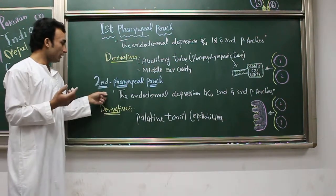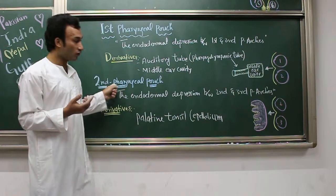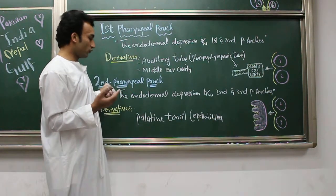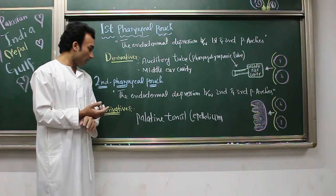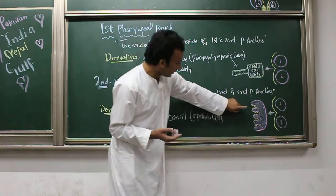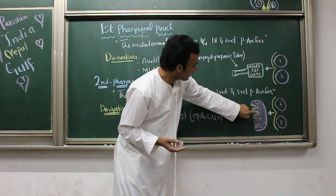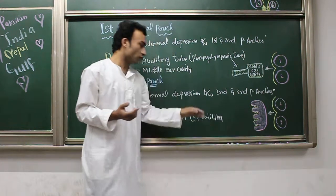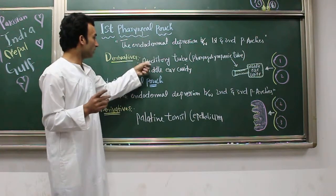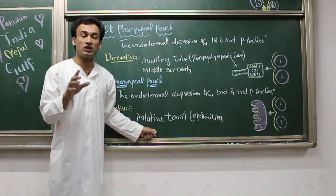Now the second pharyngeal pouch: the endodermal depression between the second and third pharyngeal arches is called the second pharyngeal pouch. The derivative of the second pharyngeal pouch is the palatine tonsil — more specifically, the epithelium of the palatine tonsil. You can see the crypts of the palatine tonsil, and these crypts are lined by epithelium derived from the second pharyngeal pouch.